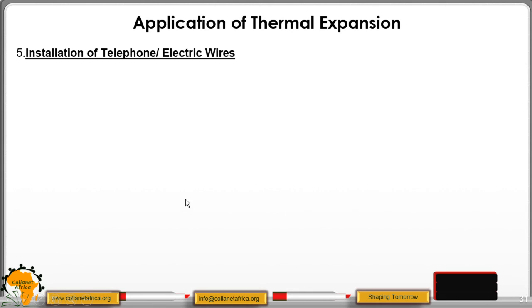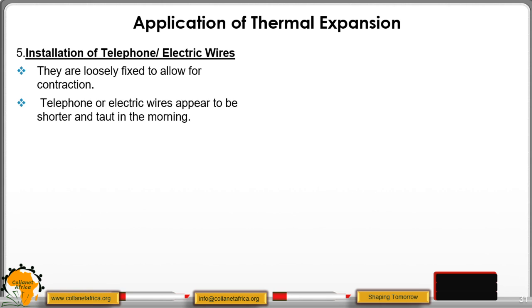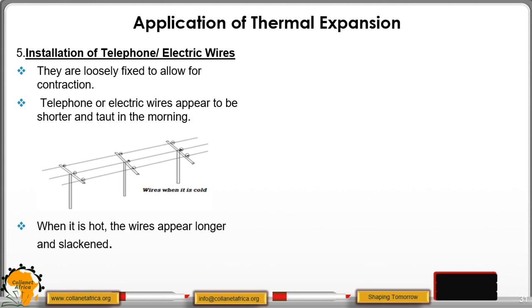Then we move to installation of telephone or electric wires. They are loosely fixed to allow for contraction. The telephone or electric wires appear shorter and taut in the morning, as shown in this diagram. This is because in the morning the temperatures are low, and this will lead to contraction of our wires. But when it is hot, the wires appear longer and slunk or sagging, as you can see here. This is because when the temperatures are very high, there is expansion and therefore the wires have increased in their size. That is why they are appearing longer and sagging.